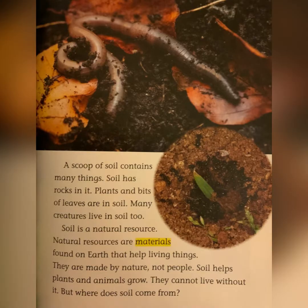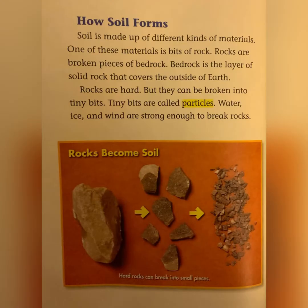They cannot live without it. But where does soil come from? How soil forms: soil is made up of different kinds of material. One of these materials is bits of rock. Rocks are broken pieces of bedrock. Bedrock is the layer of solid rock that covers the outside of earth. Rocks are hard, but they can be broken into tiny bits called particles. Water, ice, and wind are strong enough to break rocks.